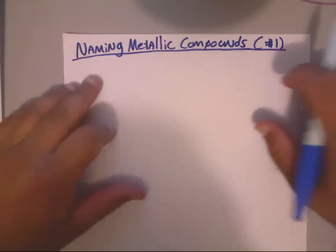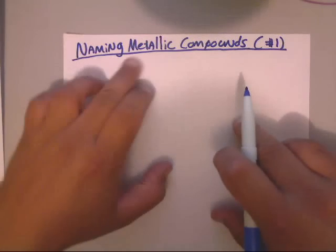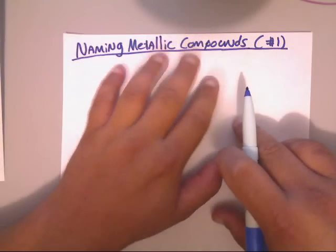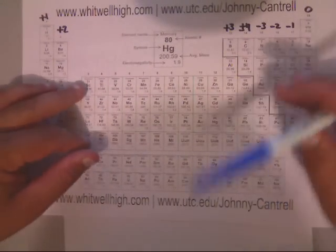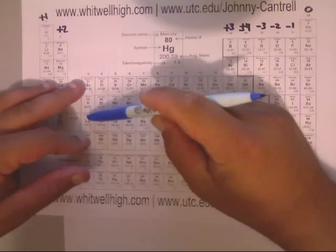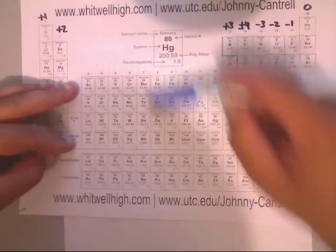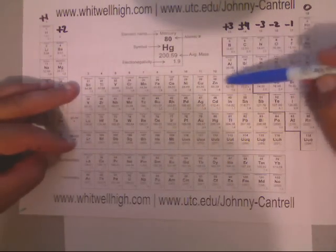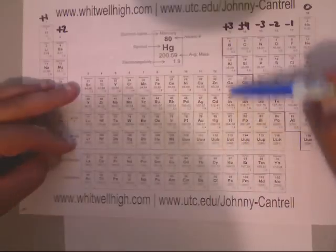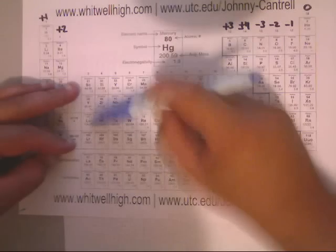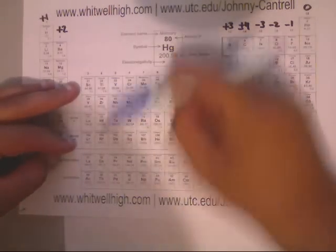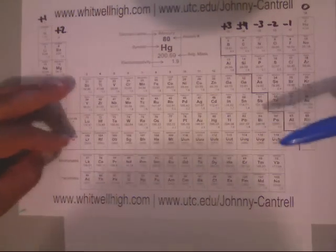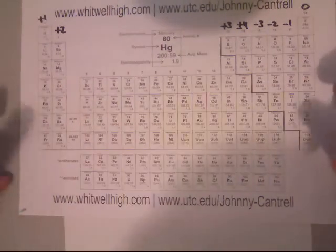In this video I'm going to show you how to name metallic compounds. A metallic compound is something that comes from the D block and maybe a little bit in the P block on the periodic table, but mainly a metallic compound is something in this general area. One of the metals — remember, metals occur first in naming these.